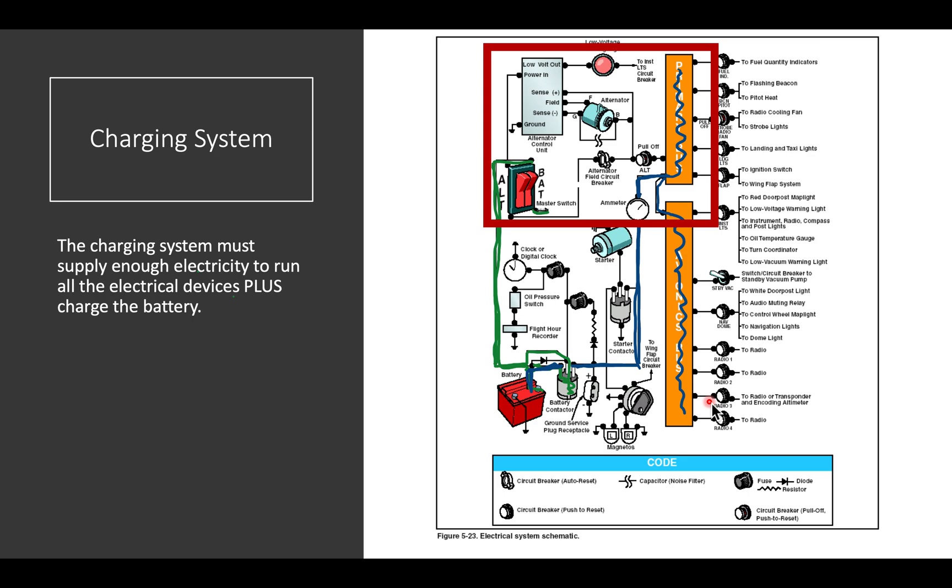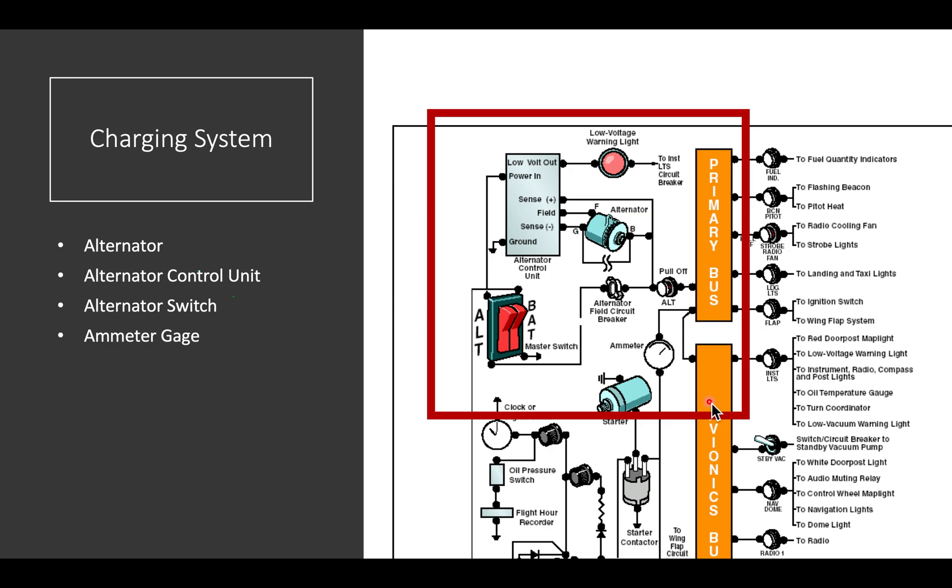Once the engine is running, the engine will turn an alternator that provides charging current to the system. There are several main components to the charging system. There's the alternator, which is turned by the engine. It produces electricity enough to run all of your devices, plus enough left over to charge the battery.